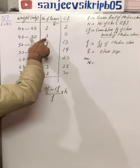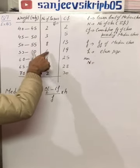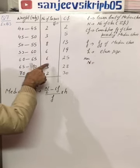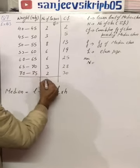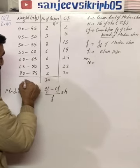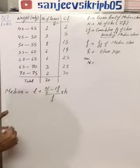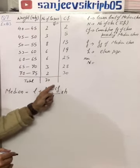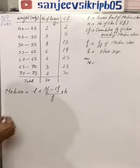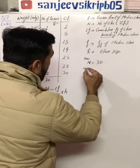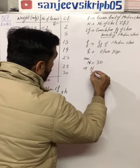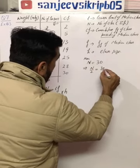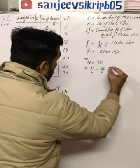N is the summation FI, total number of observations. So add: 2 plus 3 is 5, 5 plus 8 is 13, then 19, 25, 28, and plus 2 gives 30. This total should equal the last cumulative frequency. So N is 30. That means N by 2 is 30 divided by 2, which is 15.